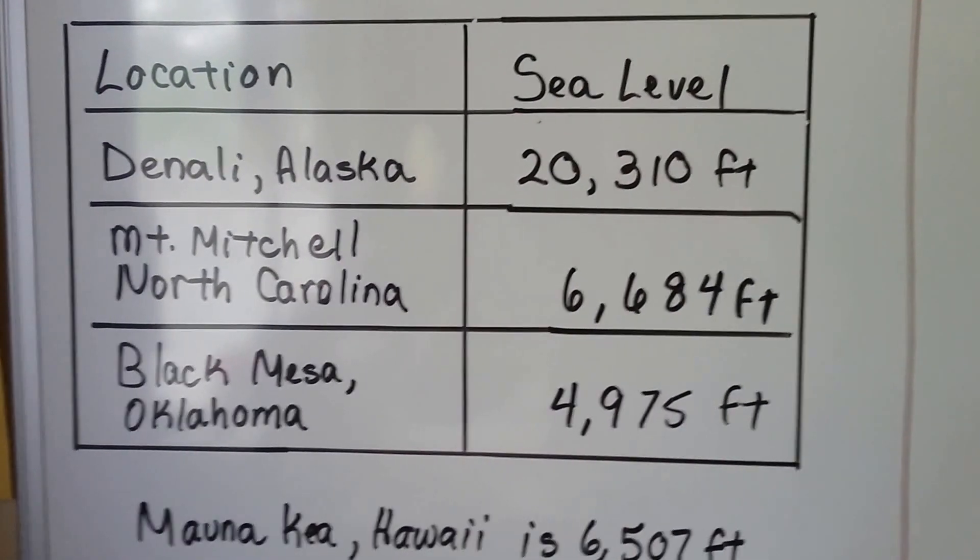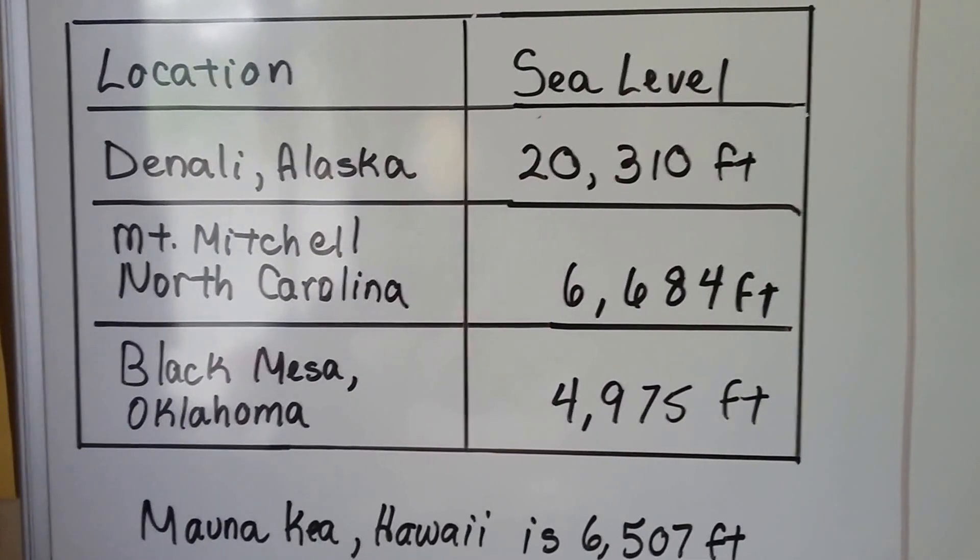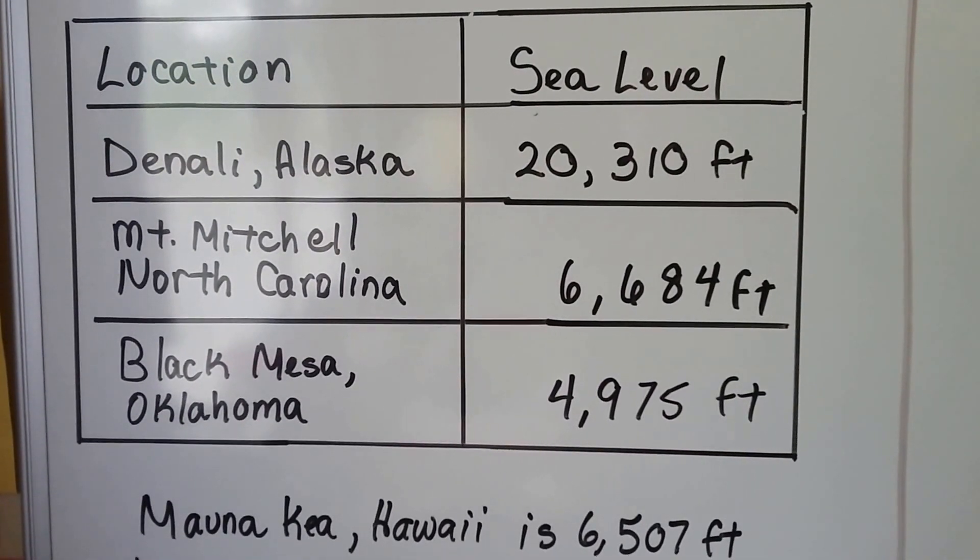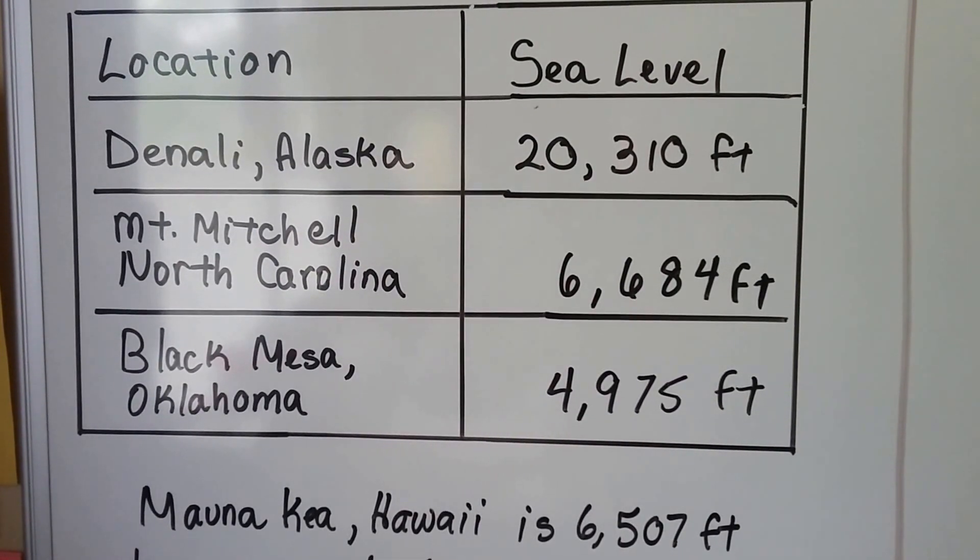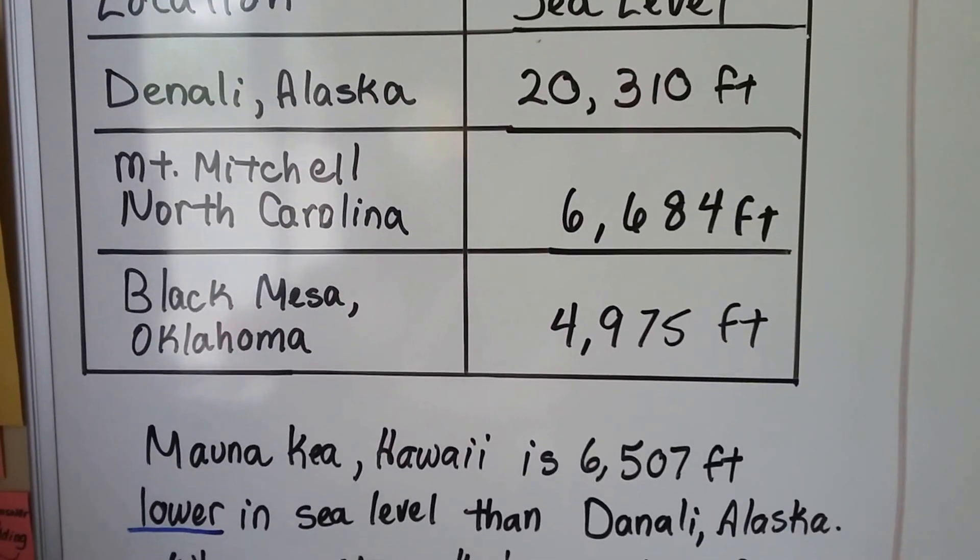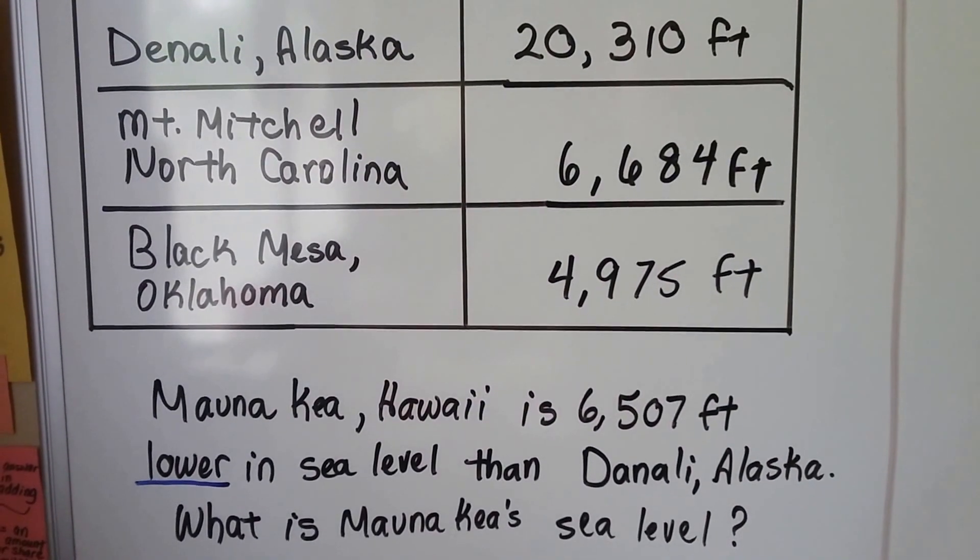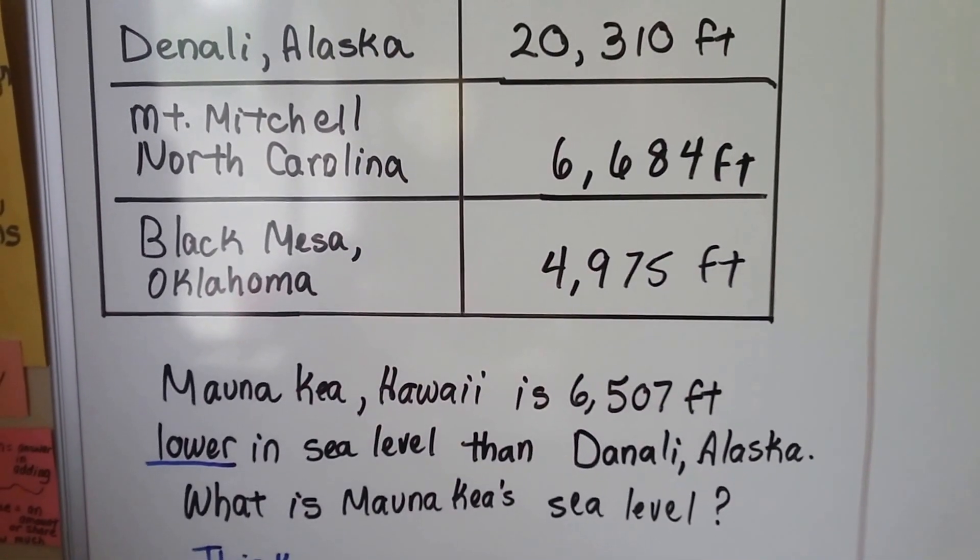So the location Denali, Alaska is 20,310 feet above sea level. Mt. Mitchell, North Carolina is 6,684 feet above sea level and Black Mesa, Oklahoma is 4,979 feet above sea level.